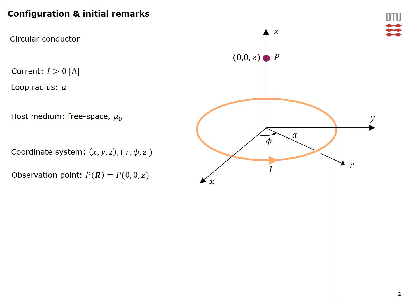We introduce two coordinate systems: the rectangular xyz and the cylindrical r phi z coordinate systems. We would like to determine the field on the axis of the loop, which is along the z axis. These are the observation coordinates in this particular case.